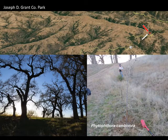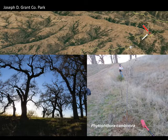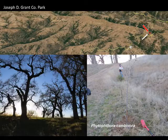It also has these nearby plantings of nursery stock where we sampled and found Phytophthora cambivora. So an introduction of the pathogen at the upper part of this watershed has the potential to spread this pathogen throughout the watershed, further down and affecting many oak populations below.